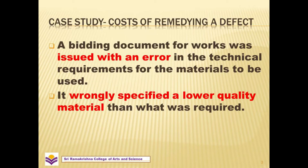Now we'll move on to the case. The case title is 'Cost of Remedying a Defect.' A bidding document for works was issued with an error in the technical requirement for the materials to be used. It wrongly specified a lower quality material than what was required. As a management student, we must be able to solve this case and analyze it in different stages of the procurement process.